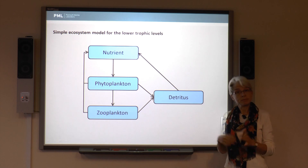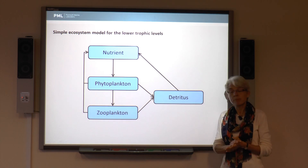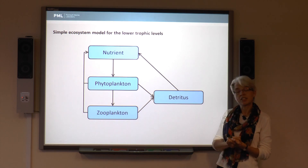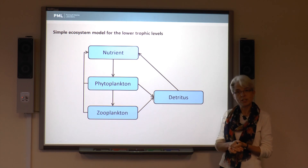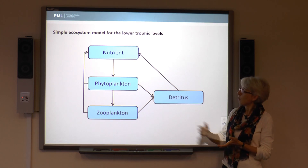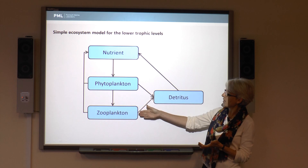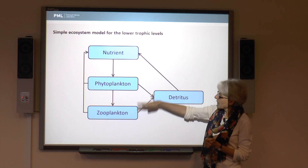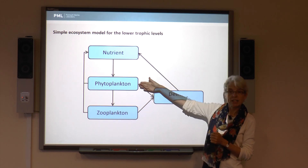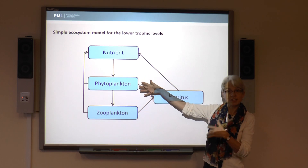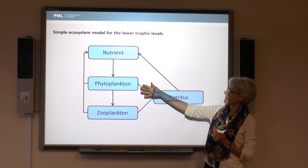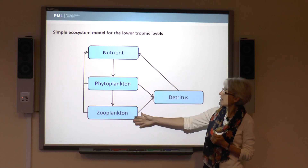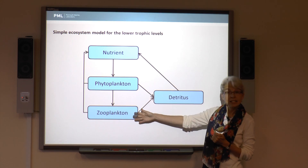Here's the very simplest model you might construct for a marine ecosystem. We've got two kinds of plankton: the phytoplankton picking up energy from the sun, using it for photosynthesis, and then zooplankton eating them.